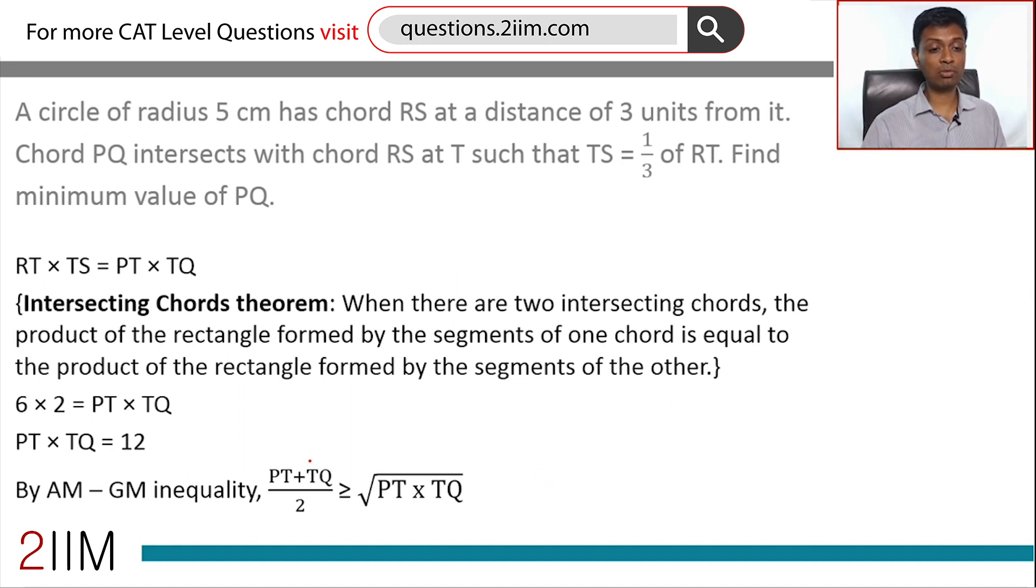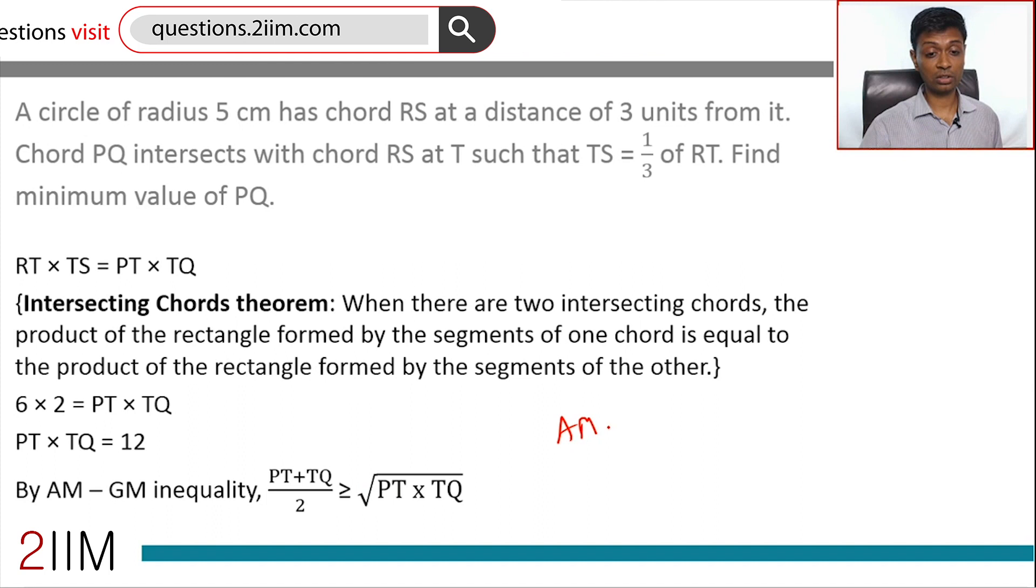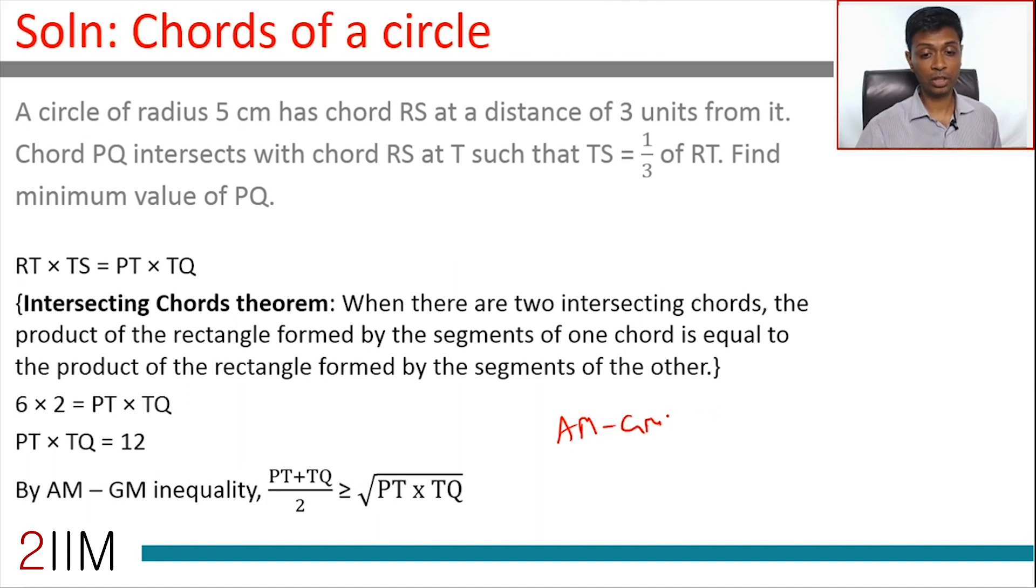How do we establish the minimum possible value is when they are equal? PT plus TQ divided by 2 is greater than or equal to square root of PT into TQ. This is AM-GM inequality: arithmetic mean geometric mean inequality. A plus B by 2 is greater than or equal to square root of AB.